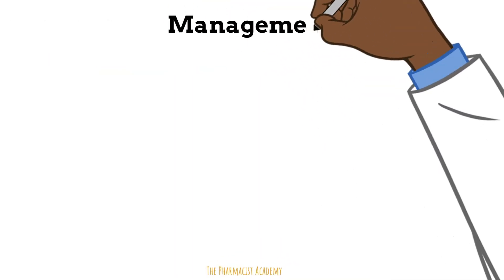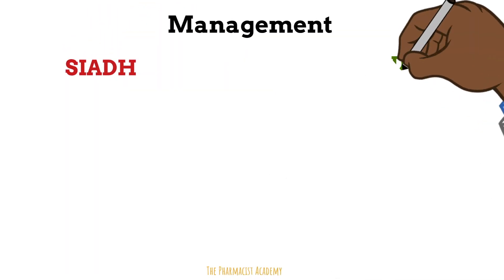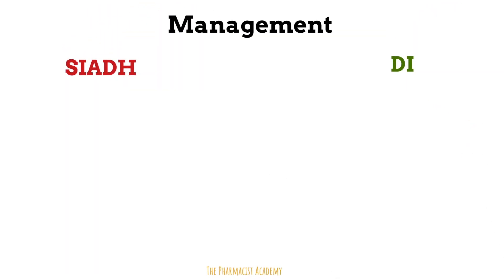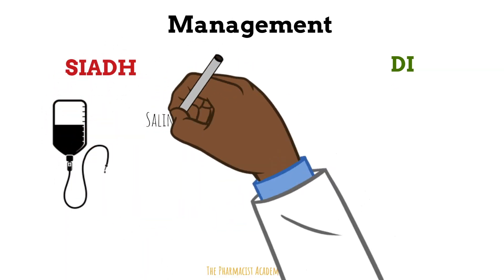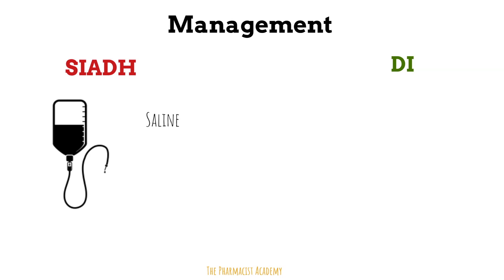So now we have the management of SIADH and diabetes insipidus. If you understood the pathophysiology and the mechanism, then this should be straightforward. In SIADH, you're holding on to a lot of volume, but we give patients hypertonic saline because there's a lot of blood volume that dilutes the blood and reduces the sodium concentration, making it seem like you have low sodium. So you have to give patients some sodium. Then we give loop diuretics to get rid of any excess fluid or volume that may be given to the patient along with the saline.